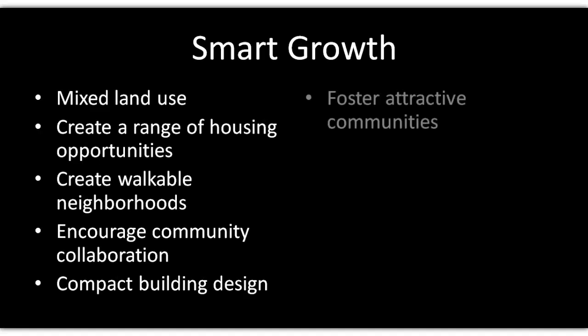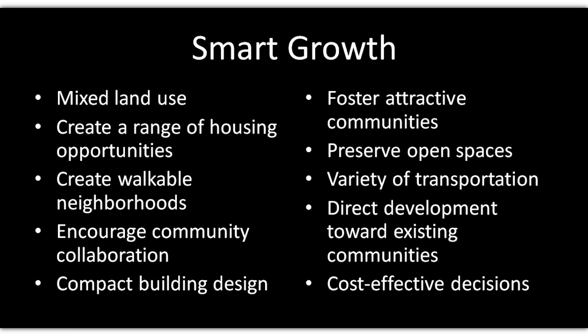Here are some examples of smart growth. It's about making a mix that works for everyone — mixed land use with parks, housing, and good schools, where everyone is involved in the process. You also have a variety of types of homes, so middle, low, and high-end homes are all in one location.